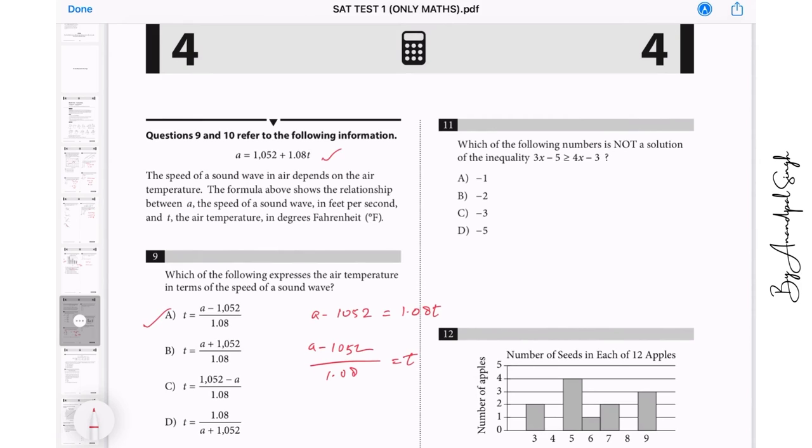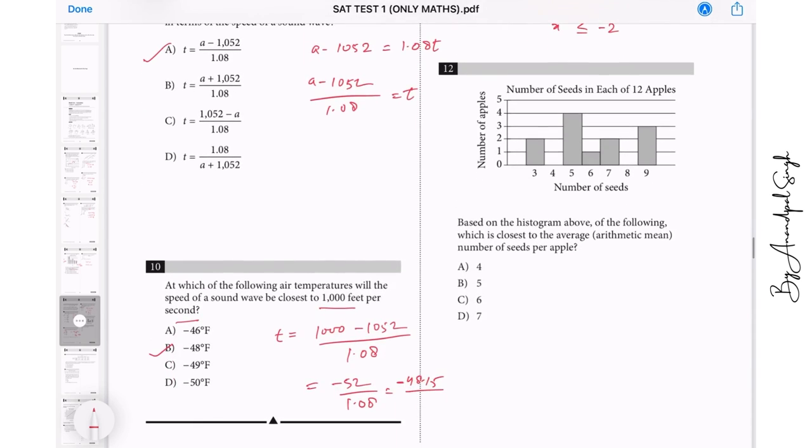So it means that our correct answer is B. Going to question 11. Which of the following number is not a solution of the inequality? Not a solution. First of all, just subtract 4x from both sides and then add 5 from both sides. We get minus x is greater than or equal to 2, then multiplying by minus 1. When you multiply by minus 1, this negative x becomes positive x, this greater than sign becomes less than, less than equal to minus 2. It means it can be B, C or D, it cannot be equal to A because A is greater than minus 2. So answer for 11 is A.